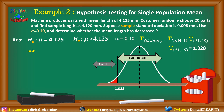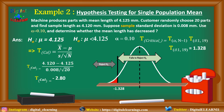Next we calculate t calculated using the formula: x bar minus mu divided by sample standard deviation divided by square root of n. Putting in all the values, we get t calculated as minus 2.8. Plotting this minus 2.8 in the graph, it falls in the rejection region. So we reject the null hypothesis at 0.1 level of significance — there is sufficient evidence to indicate that the average length of the part has decreased.